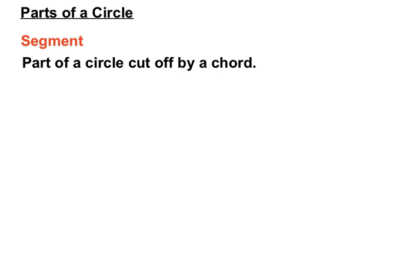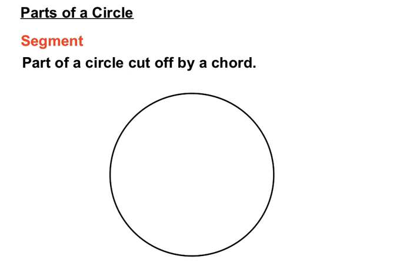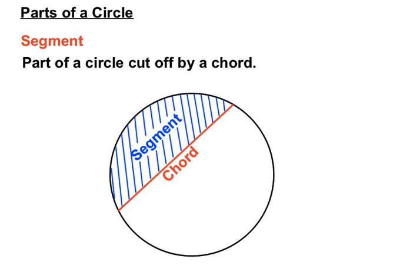We have a segment, and that's part of a circle created when a chord goes across a circle. We have a chord here and that creates a segment section. Technically that's a minor segment that I've got shaded here, and there's another major segment. The chord actually cuts the circle into two segments, but we'll call that smaller section a segment.